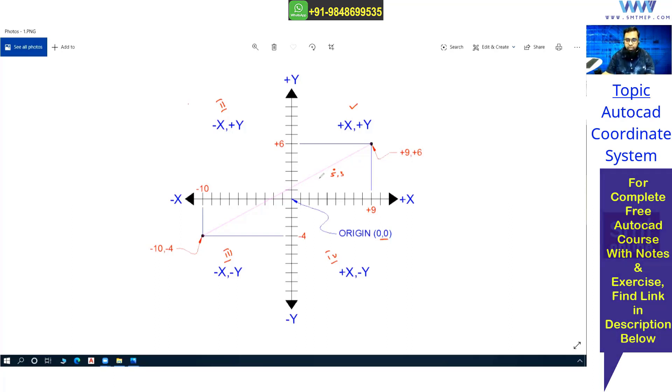It can be in millimeters, centimeters, or feet. At present, I'm considering one division as one unit. Similarly, here is nine comma one, and here is nine comma six.